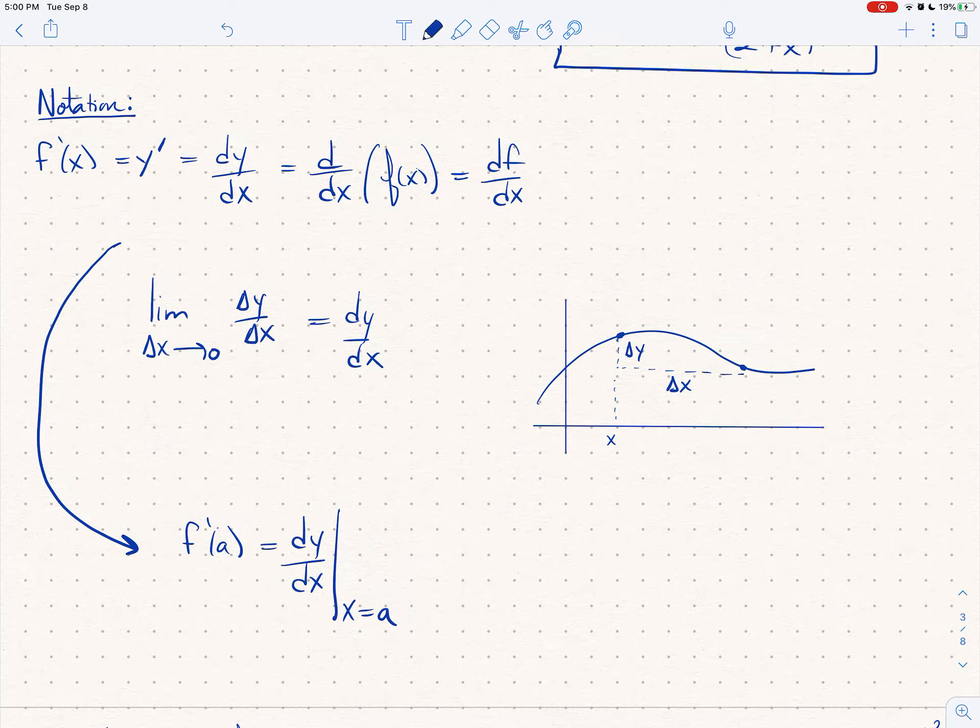And then one more specific example. If I write d dx of something like x squared, we already took the derivative. So you know that this is just 2x, so this notation, d dx, is saying take the derivative of whatever's inside with respect to x, and we proved earlier this is just 2x.